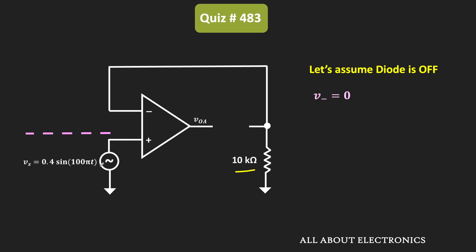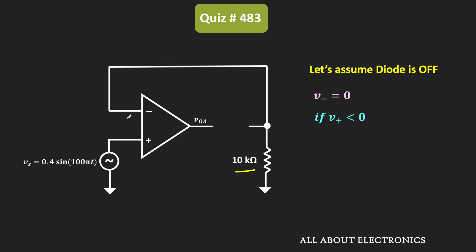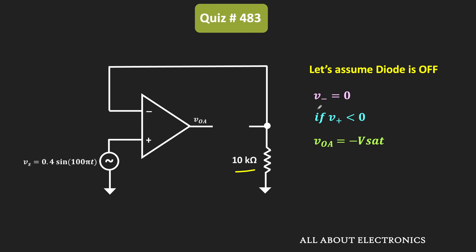So now in this condition, if the voltage at the non-inverting terminal or this input signal Vs is less than 0, then the output of the op-amp will be equal to minus Vsat, because the op-amp will act as a comparator. Whenever this V- is greater than V+, the output of the op-amp will be equal to negative saturation voltage. That means the voltage at the anode of the diode is equal to minus Vsat, while the voltage at the cathode of the diode is equal to 0. So in this condition, this diode will remain in the open condition.